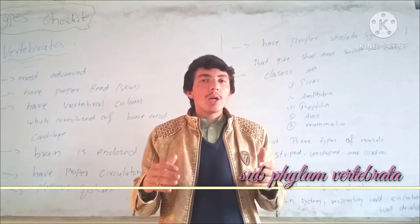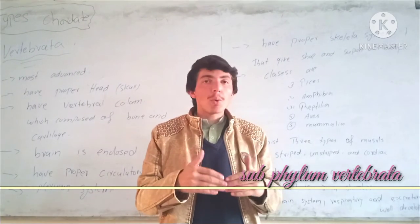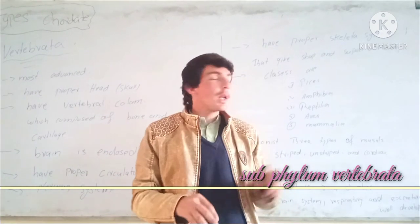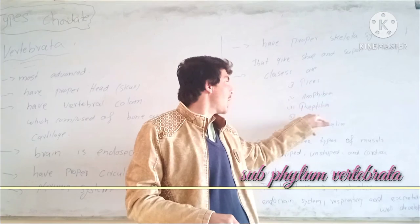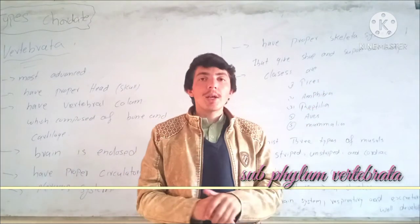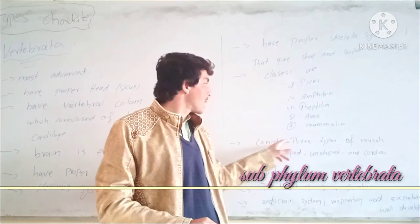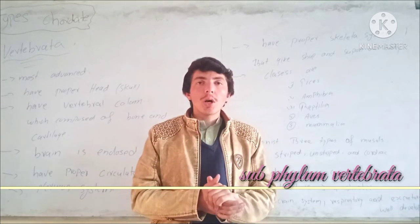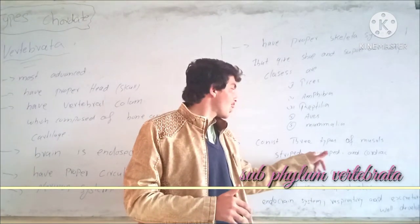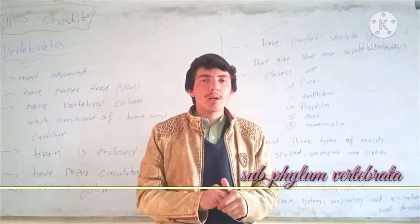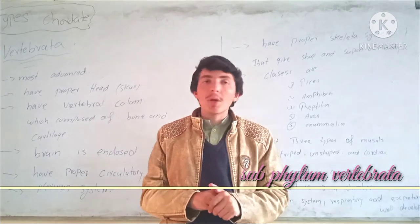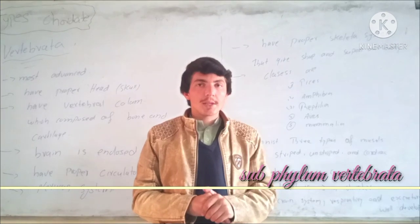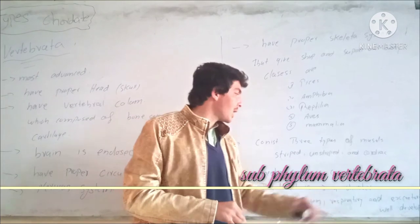The classes of Vertebrata include: the fishes, reptilia, aves, and mammals. The first class of the body consists of three types of muscles. Proper muscle — well developed — with three types: trapezoid, acetyl, and cardiac muscle. Alimentary canal is complete. Heart has three to four chambers.